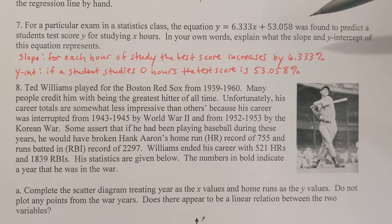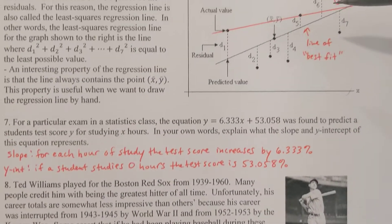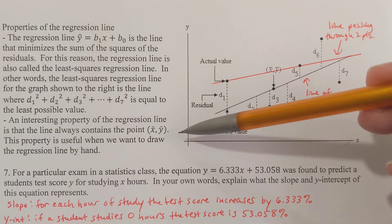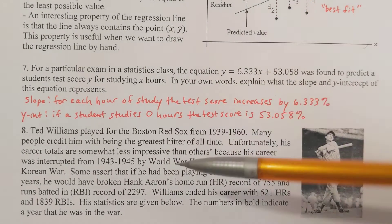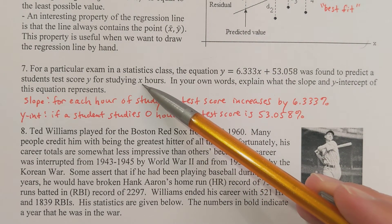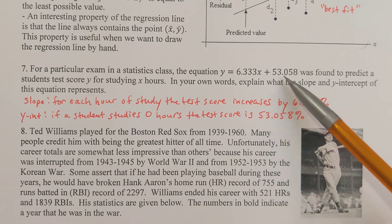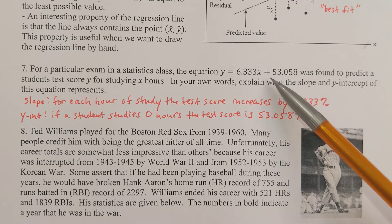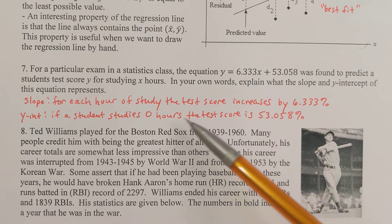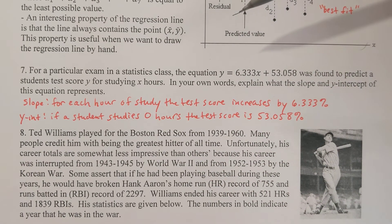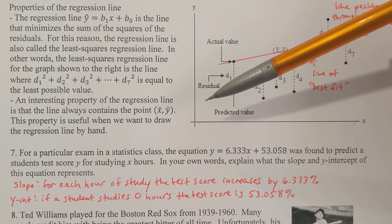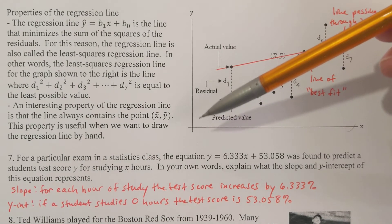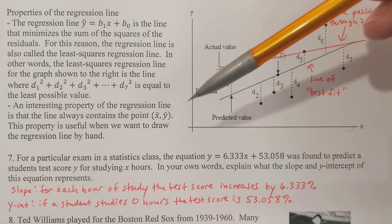The y-intercept — what does that mean where the line crosses the y-axis, or when x is 0? If a student studies for 0 hours, the test score would be 53.058. That's the translation of what the y-intercept means. The y-intercept is the point where the line crosses the y-axis, or when x is 0. Always think of finding the y-intercept when x is 0.